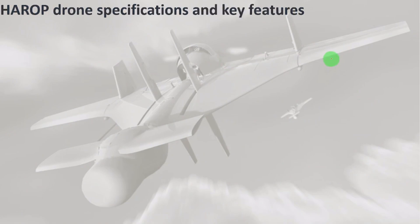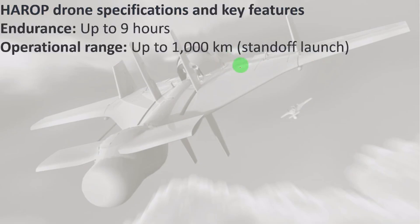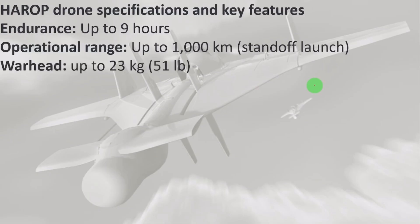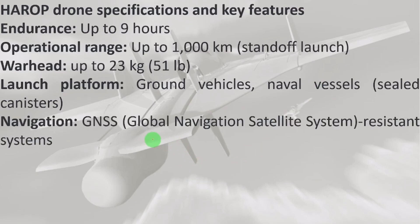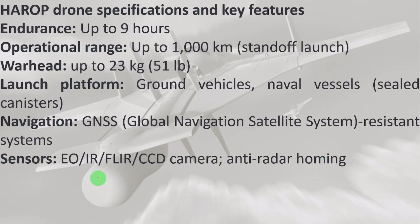HAROP drone key specifications: endurance up to 9 hours; operational range up to 1000 km; can be launched from land, naval vessels, or vehicle-mounted sealed canisters. Warhead: carries up to 23 kg of explosives for destroying targets. Navigation: GNSS-resistant systems. Sensors include electro-optical (EO), infrared (IR), FLIR, CCD camera, and anti-radar homing.